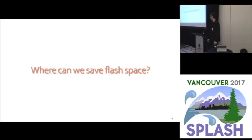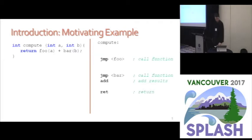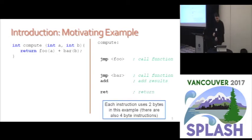To introduce the problem, I'll walk through an example compilation of a really simple C function into ARM assembly language. I'll start with a skeleton assembly of what this function would look like. This function has two calls — one to foo, one to bar — we add up the results, so in the assembly we have two jumps, an add instruction, and a return at the end. In the ARM thumb2 instruction set, each of these instructions takes up two bytes, so if we can get rid of some of them we save space.